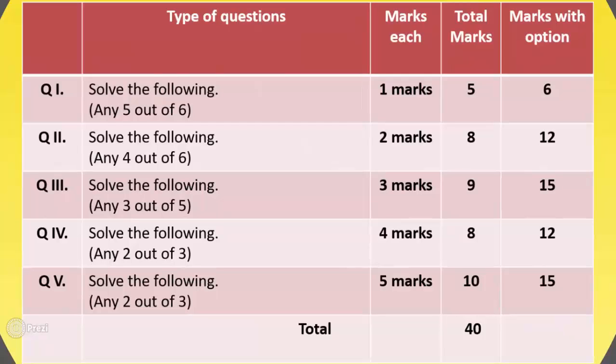Question number 3 is: solve the following, any 3 out of 5. Marks are 3 each for question number 3, giving total marks of 9, and marks with option are 15. Question number 4 is: solve the following, any 2 out of 3. Marks are 4 each for question number 4.